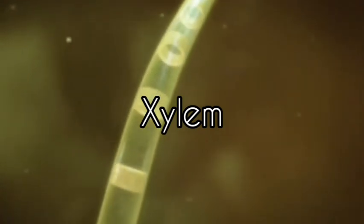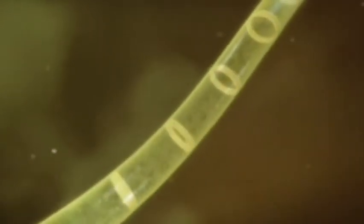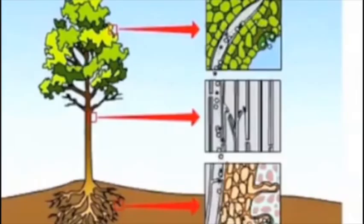These xylem cells are connected end to end, forming a system of tubes from root to leaves. This is the raw material for photosynthesis: water is taken from root to leaves through xylem tissue.